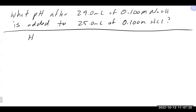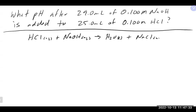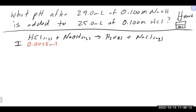Our equation is HCl plus sodium hydroxide going to water and sodium chloride. We're doing an ICE table in moles. Moles of HCl: 0.025 L × 0.1 M = 0.0025 moles. Moles of sodium hydroxide: 0.029 L × 0.1 M = 0.0029 moles, and zero of the products.